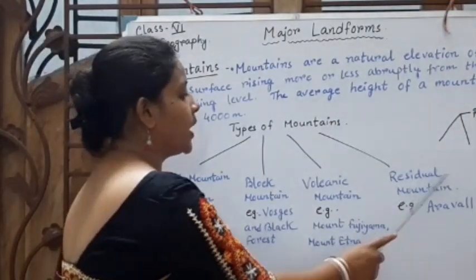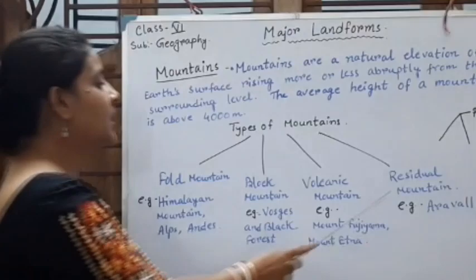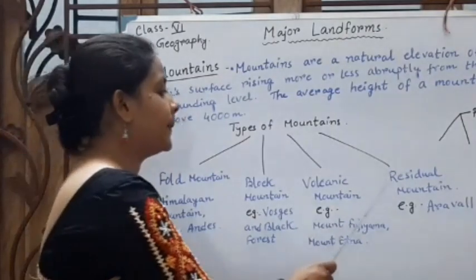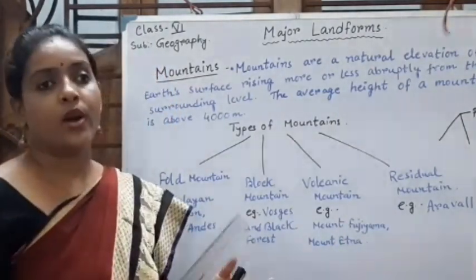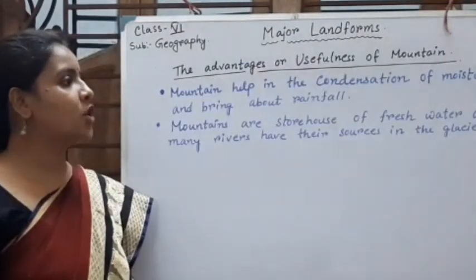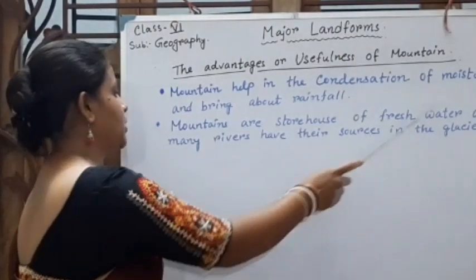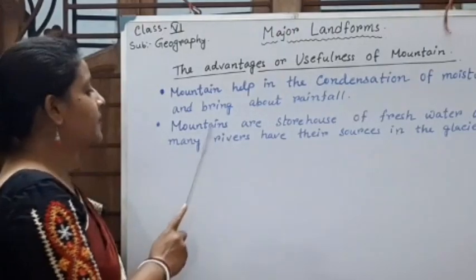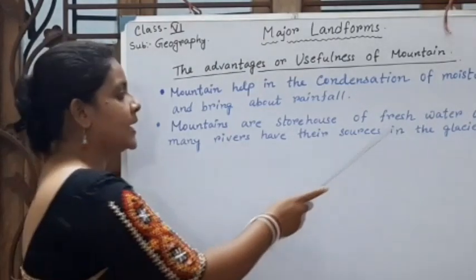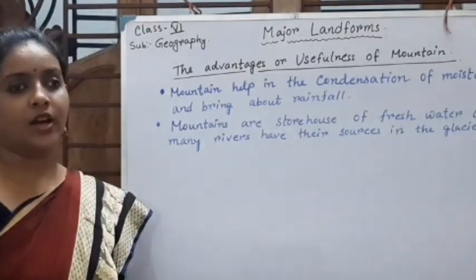Next is residual mountain. This mountain was also a high mountain, but here the mountain-building process has stopped. They have been worn down to a rounded peak, so they are called residual mountains. The usefulness of mountains: mountains help in the condensation of moisture and bring about rainfall. Mountains are also storehouses of fresh water, as many rivers have their sources in glaciers — for example, the Ganga, whose source is in the Gangotri glacier.